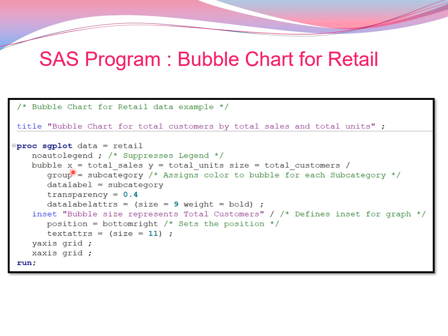The noautolegend option suppresses the legend — it will not show the legend in the chart. The bubble statement has x axis representing total sales, y axis representing total units, and the size of the bubble is total customers. I'll use a backslash for various other options in the bubble statement.